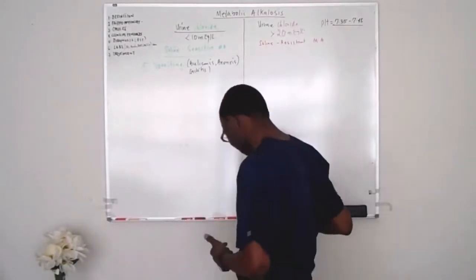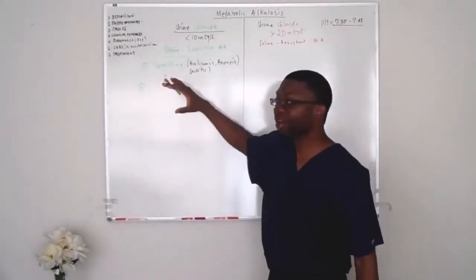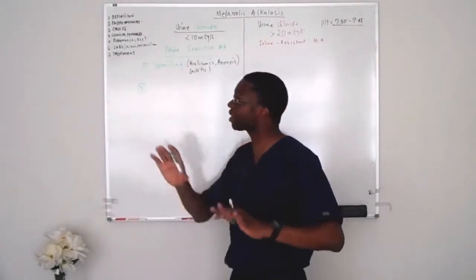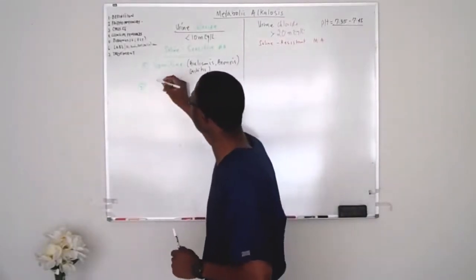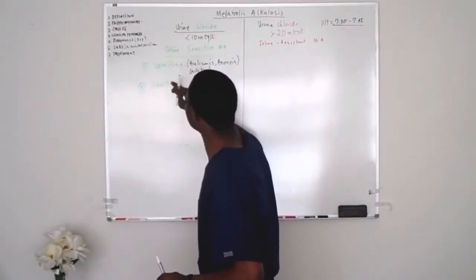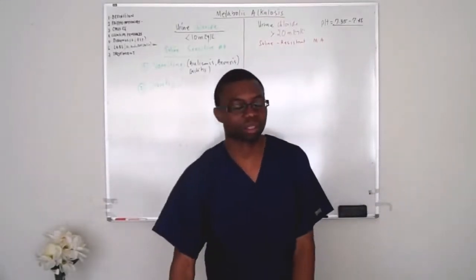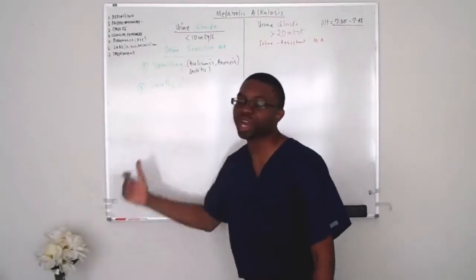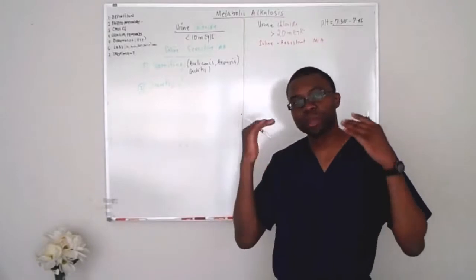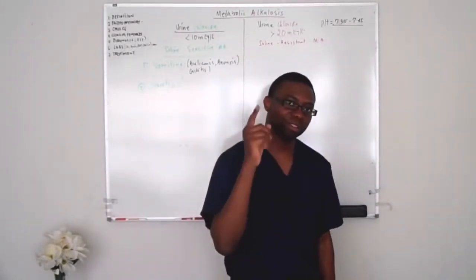Another way you can develop saline-sensitive metabolic alkalosis is with diuretics. Diuretics — classic examples are furosemide and thiazides. They're going to dry you up. That's where the problem is. But we're going to talk about the pathophysiology to make it make more sense. Remember: vomiting and diuretics.